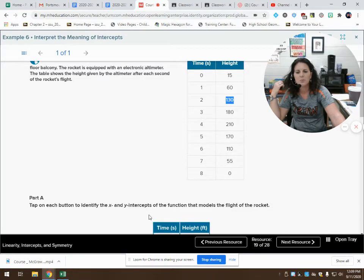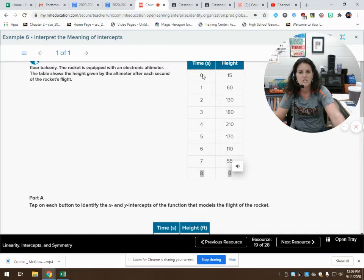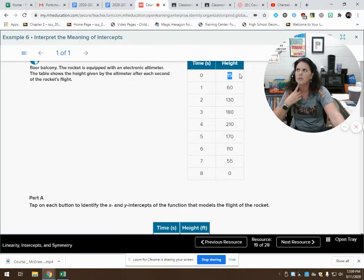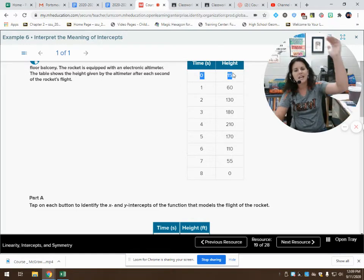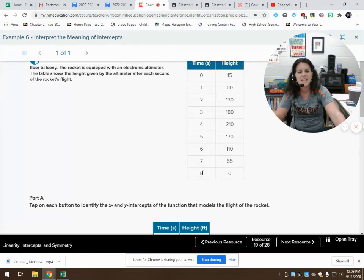Part A says tap on each button to identify the x and y intercepts. Looking at the table, we care about the zeros, right? We know that that's going to be my x and y intercepts. So when x is 0, y is 15. Is that my x intercept or is that my y intercept? Of course, that is my y intercept. I have a y intercept of 15. It gets back down and hits the ground after 8 seconds. So my x intercept is at 8.